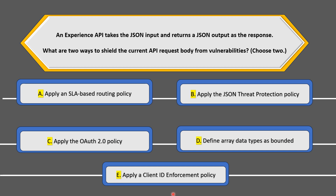Option E is apply a client ID enforcement policy, which is similar to the SLA-based routing policy. The difference is that instead of checking request count for a specific client, it enforces the requester to always use a client ID and client secret when sending the request. Essentially, this is also an authentication policy and is not useful for shielding the API request body from vulnerabilities.